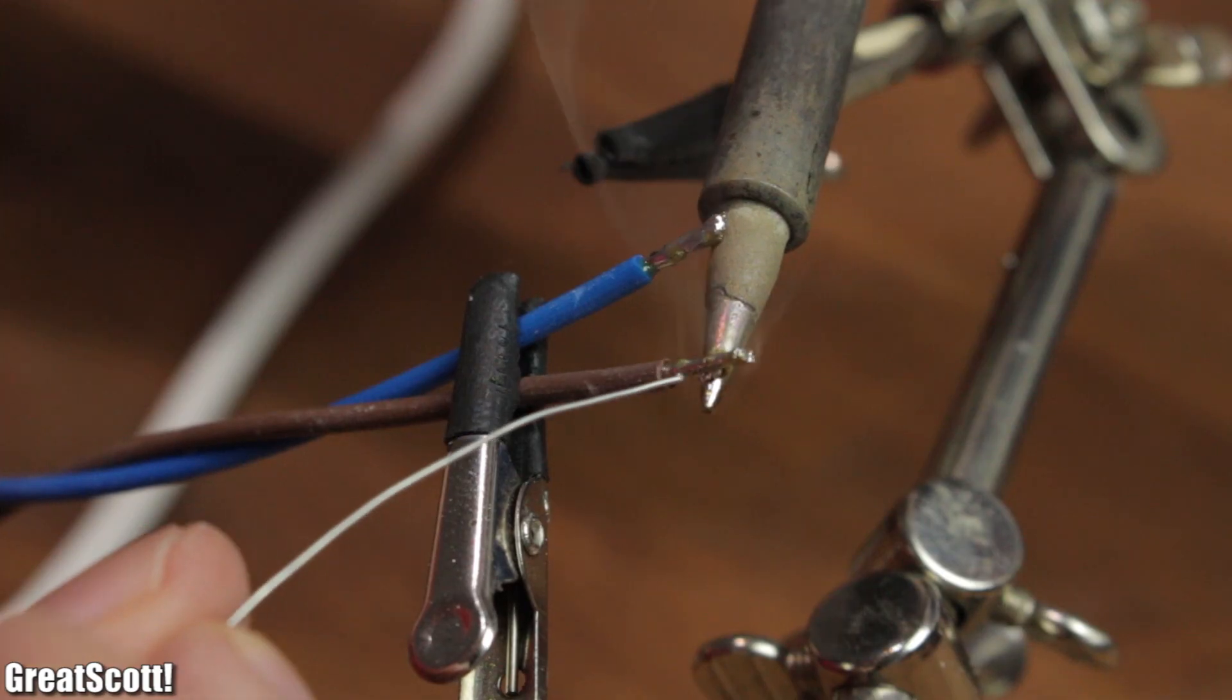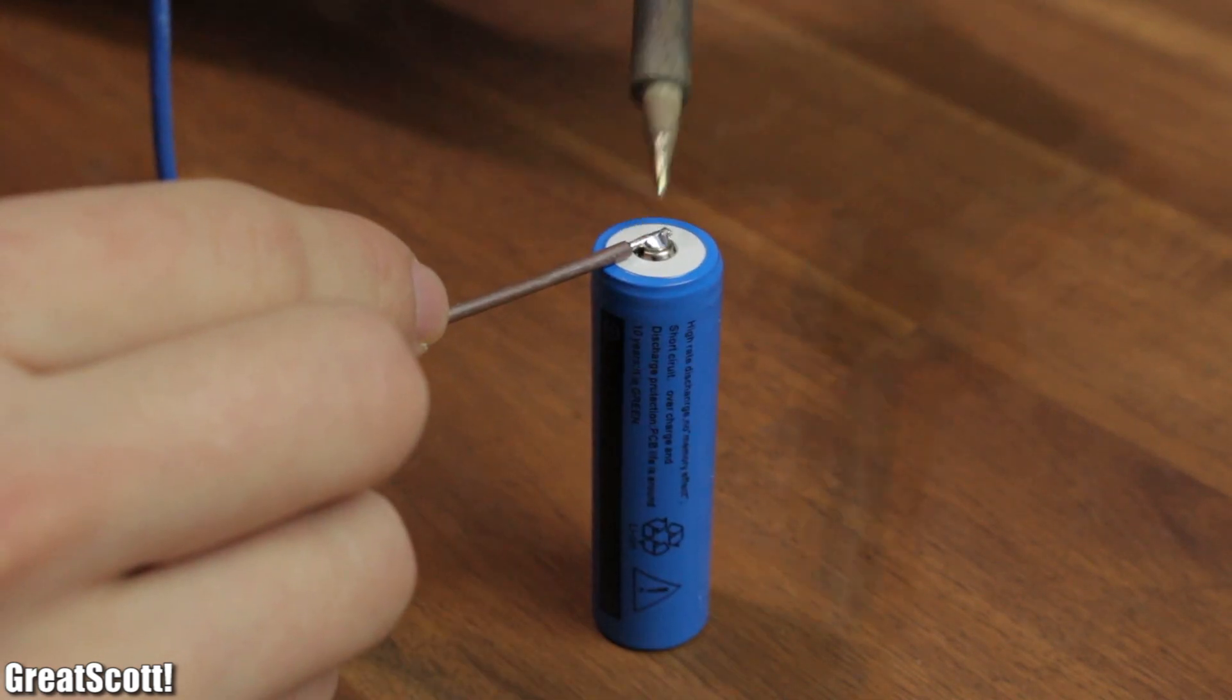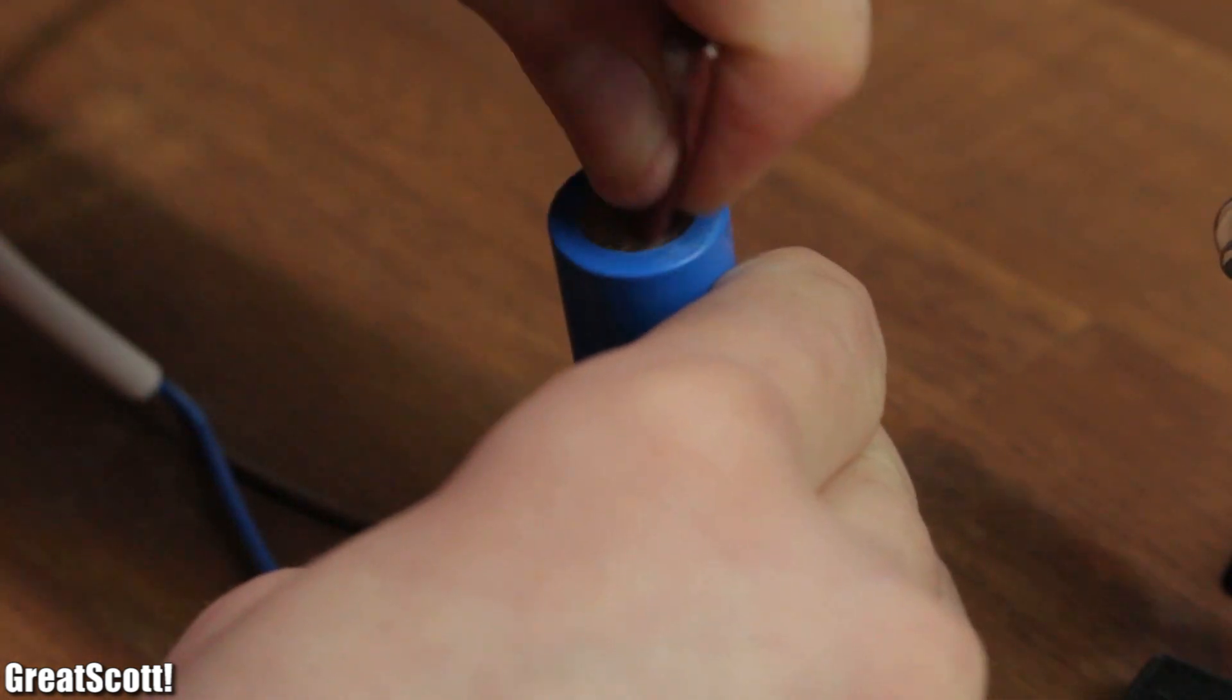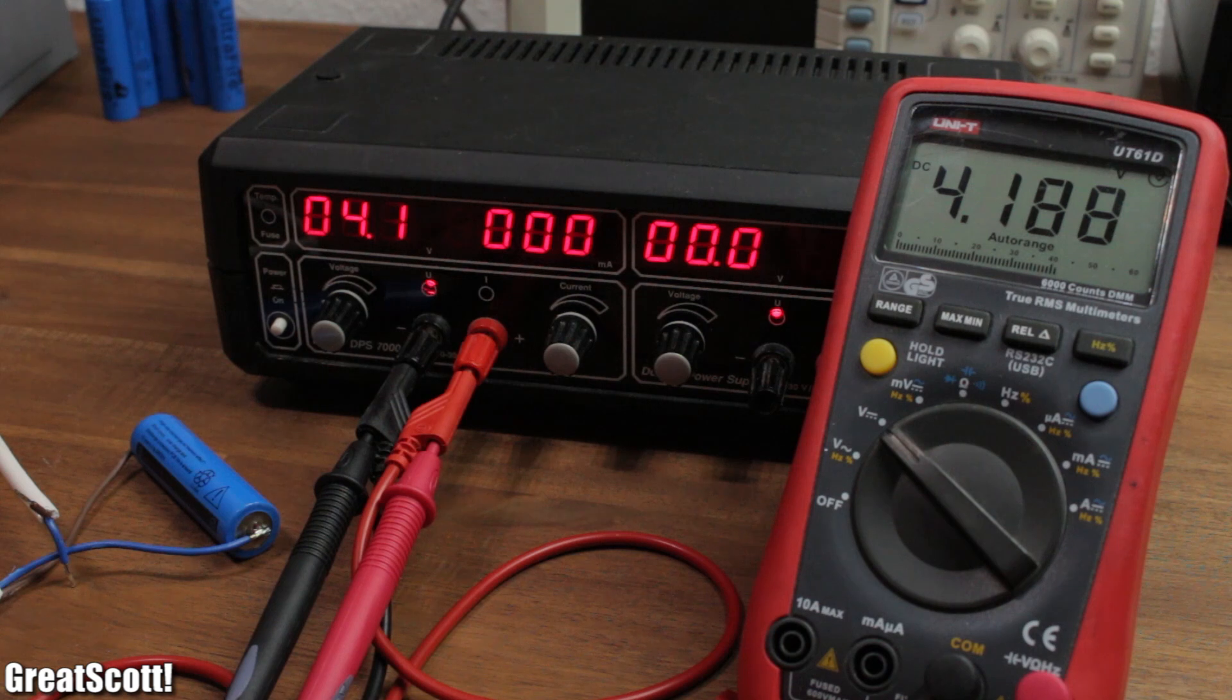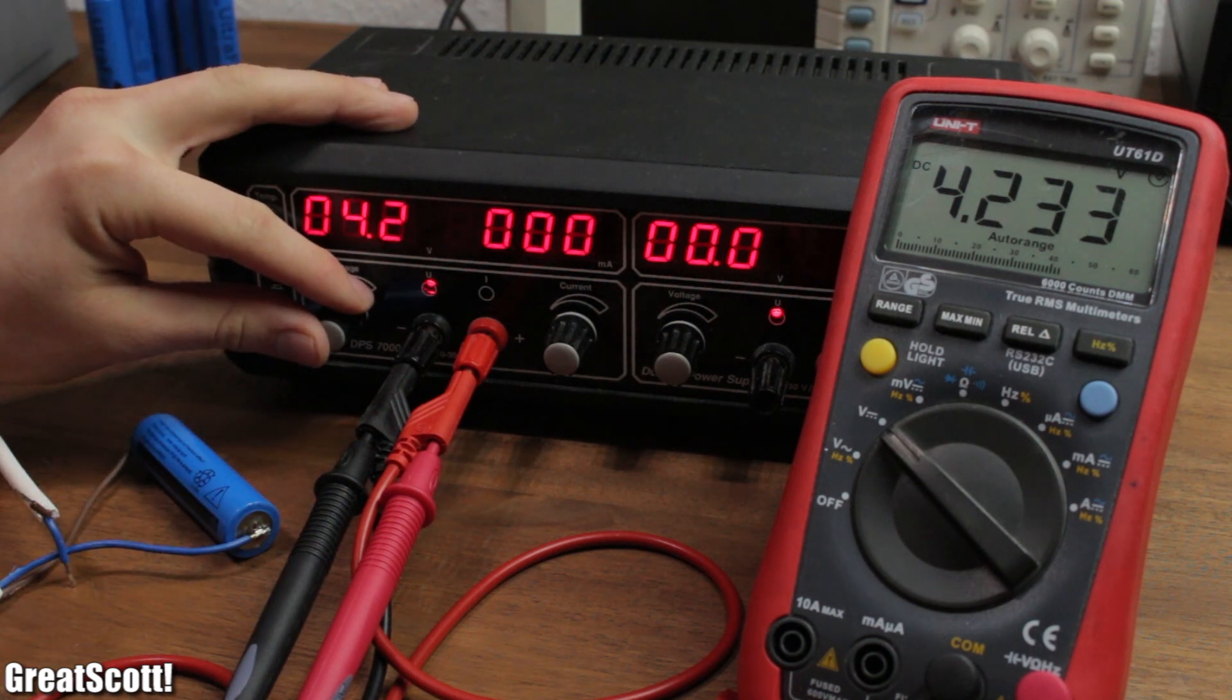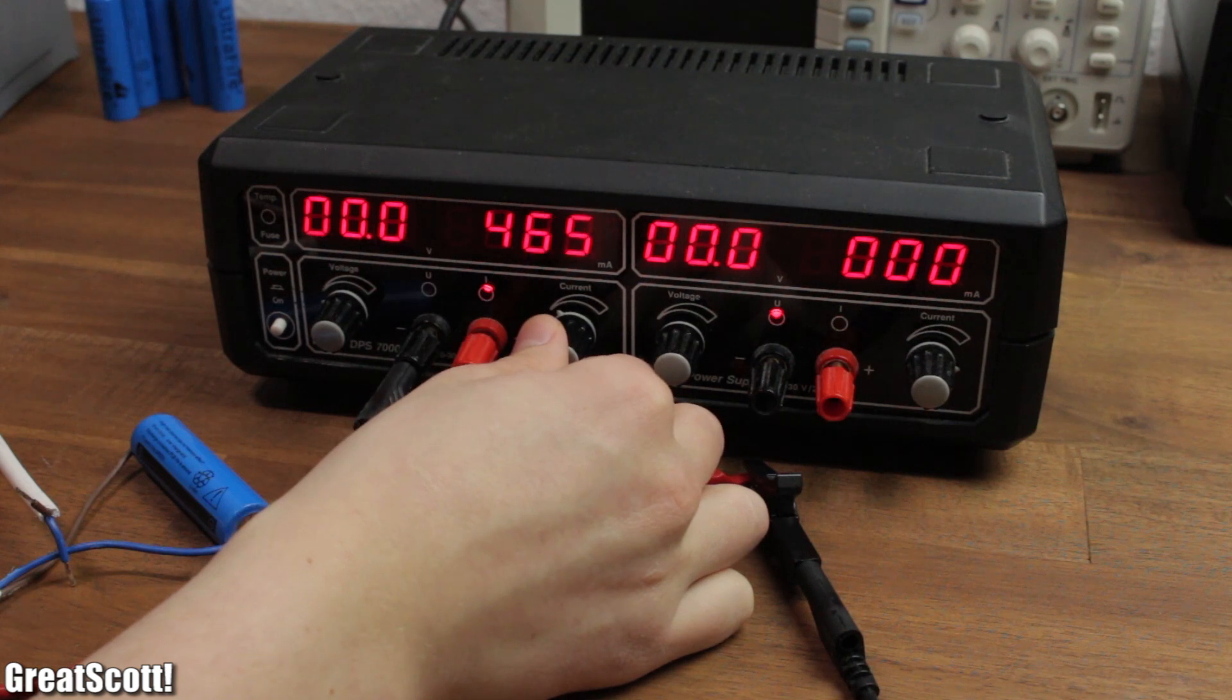Just to make sure that there really wasn't a protective circuit, I started to solder a wire to the plus terminal. And I used sanding paper to rough up the negative terminal, so I could solder another wire there. Then I got my bench power supply and limited the voltage to 4.2 volts and the constant current to 500 milliamps.